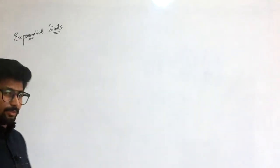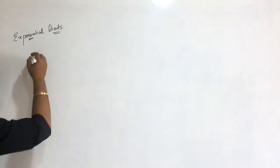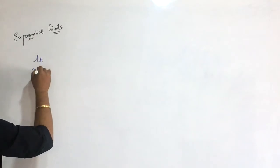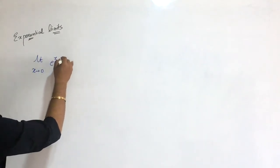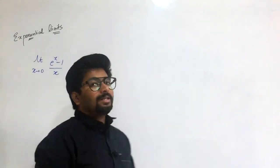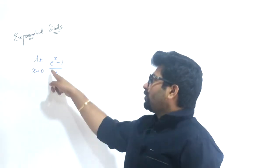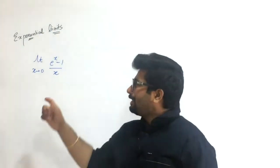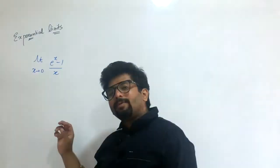Let's say you have limit x approaches 0 of e raised to power x minus 1 upon x. First check if it's in indeterminate form. When x goes to 0, e raised to power 0 goes to 1, so 1 minus 1 is 0, and denominator also goes to 0. So yes, we get 0 by 0 indeterminate form.